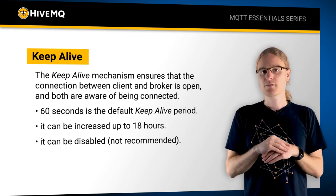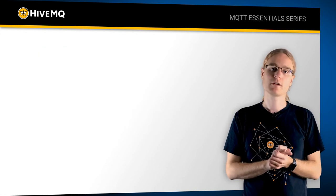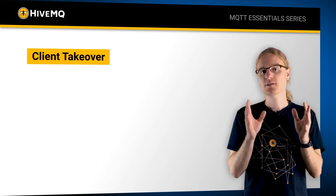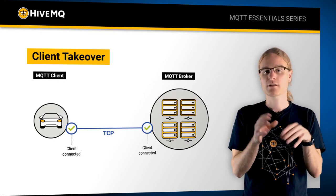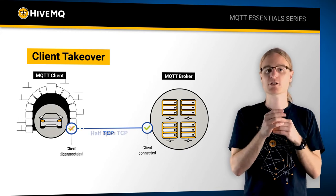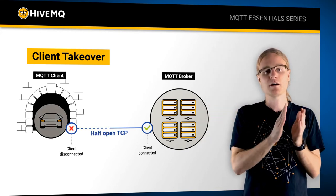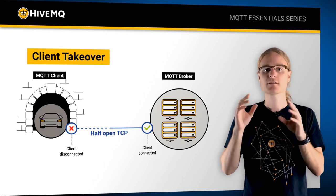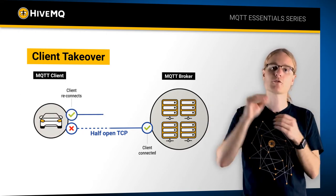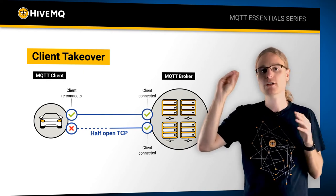There is a second thing which is very useful and is a unique feature of MQTT: the so-called client takeover. Let's assume you have an MQTT client, like a car. It drives through a tunnel, loses the connection, and the broker is not aware that the client disconnected. But after a few seconds, the car reappears and wants to reconnect to the broker, but the broker still believes the old connection is valid.